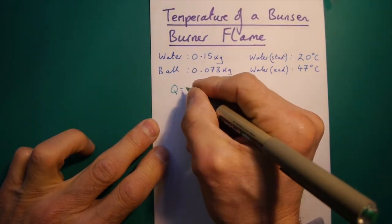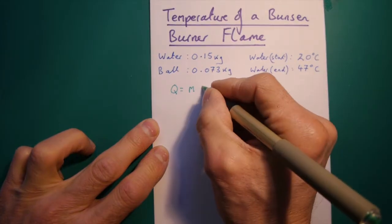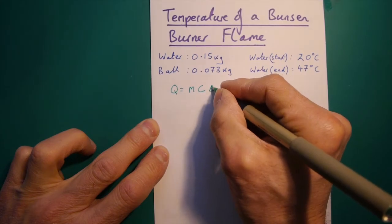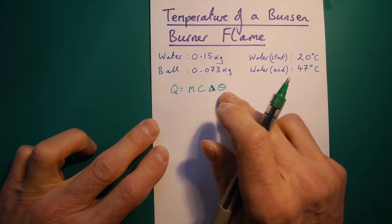I use theta here, but we could use delta T. So, using our numbers, Q, the amount of energy taken from the ball and fed into the water, in other words, to cool down the ball, was the mass of the water, 0.15.